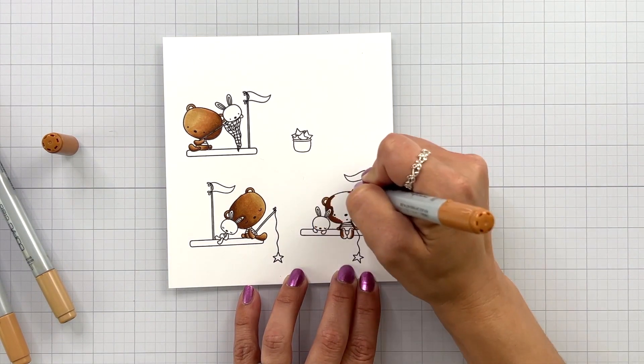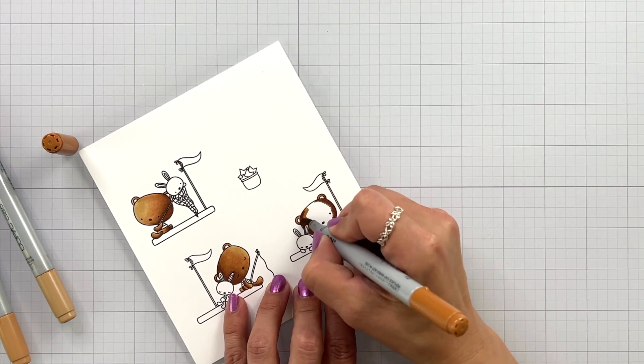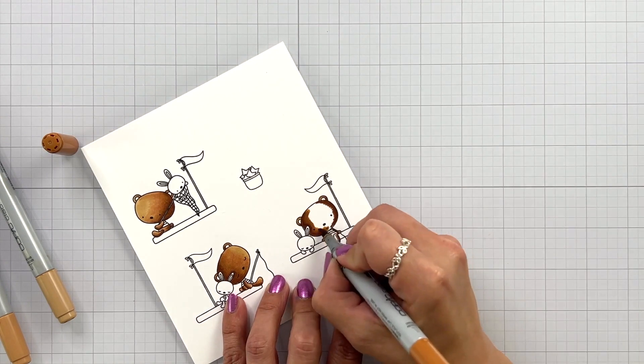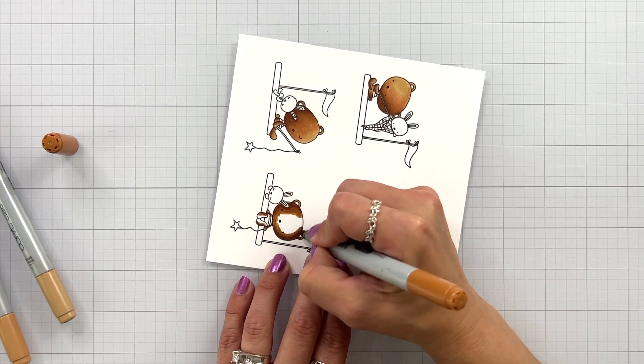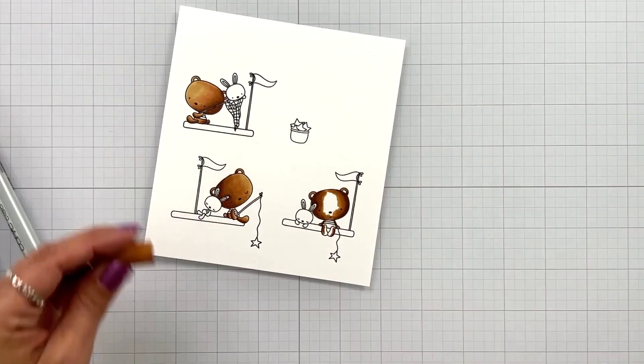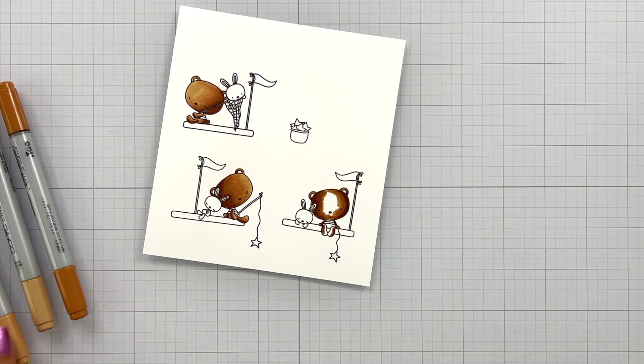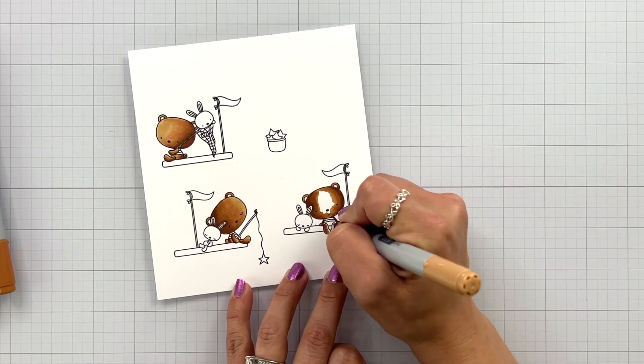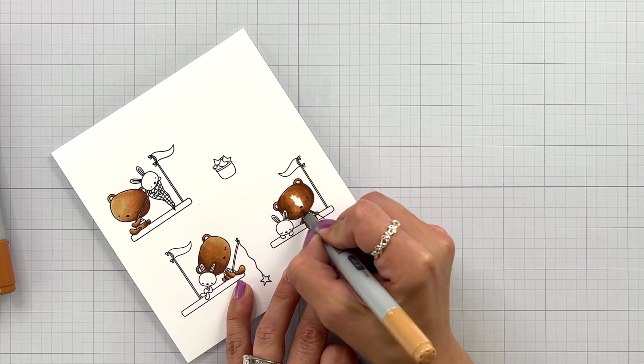Now this one I'm going to add the shadow areas on both sides so that way the highlight area is going to be directly down the center of the bear. So I have the E37 on the side of the head and then blending out with that E35, 33, and 31. The legs and body might not get all of those colors because they are smaller areas.